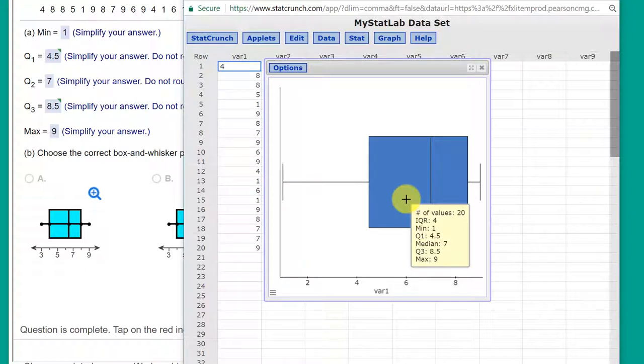That's your five-number summary without having to get the descriptive statistics. A quick way to get this done. Hope this helps.